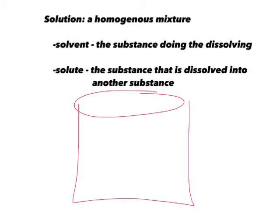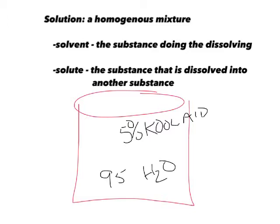So if you had a glass of Kool-Aid, and in there you had 5% Kool-Aid mix, the rest would be water, and that means that there would have to be 95% water in this solution. So 5% Kool-Aid plus 95% water equals 100% of the solution.